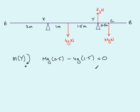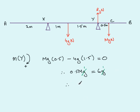Solving the equation: we have 0.5Mg, and 4g times 1.5 gives 6g. Adding 6g to both sides gives 0.5Mg = 6g. The g's cancel, and dividing both sides by 0.5 gives M = 12 kilograms.